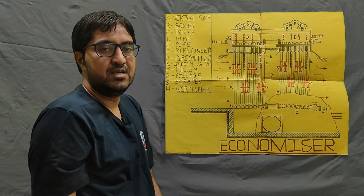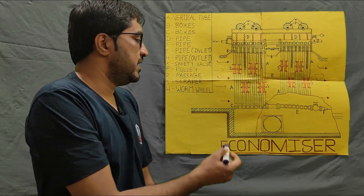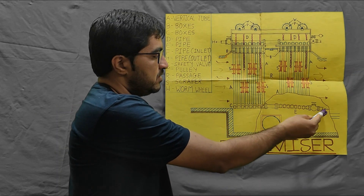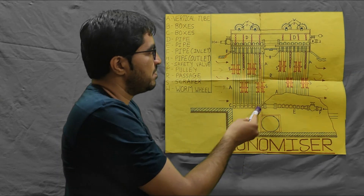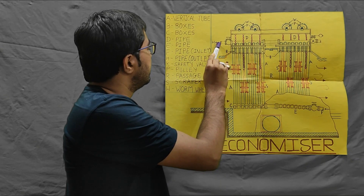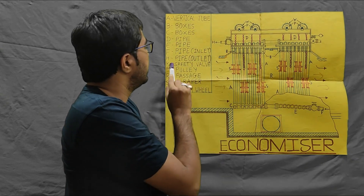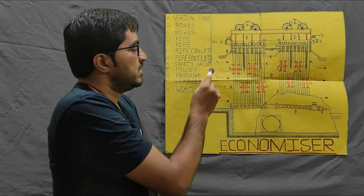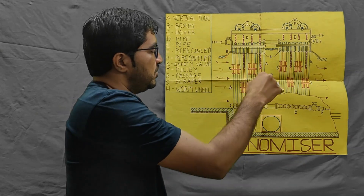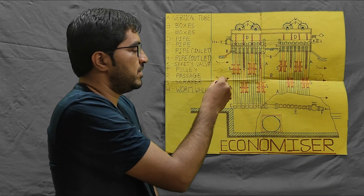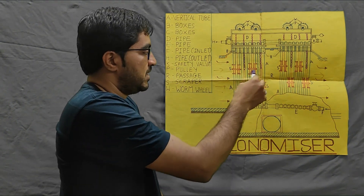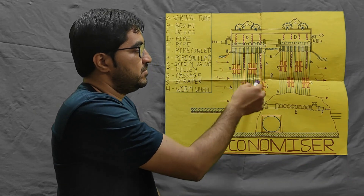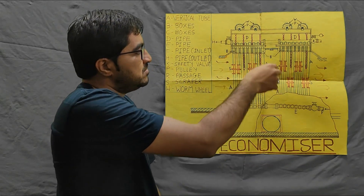Let us start how it works. The cold water enters from this pipe — this is the inlet pipe — and this is the outlet pipe for hot water. The flue gases pass through the bundle of tubes. This is the inlet of the flue gases, and there is an exchange of heat between the tubes and the flue gases. The flue gases reject heat and the water receives heat from the tubes.